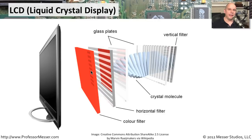This is why LCD displays generally don't have the blackest blacks, because you always have a light shining through. And you'll find if you're doing a lot of graphics work or work that needs to be printed, you need very good color representation on the screen. You want to make sure that you have a very high quality LCD because of that backlight.